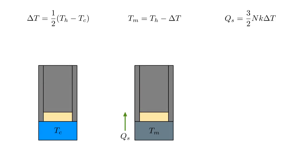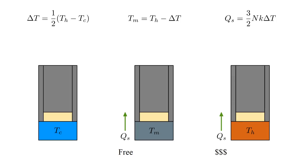To warm the gas from T cold, we reconnect it to the medium temperature reservoir and extract the heat we stored during the cooling process. Then we connect the hot reservoir and transfer the second half of the heat. We have to make up for this by burning fuel, but we've recycled half of the heat required for heating the gas, and so cut our fuel cost for this process in half.